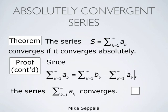We observe that ak equals bk minus the absolute value of ak. Thus, s summation k from 1 to infinity of ak equals summation k from 1 to infinity of bk minus summation k from 1 to infinity of the absolute value of ak. We have shown that the series of bk converges, and we assumed that the series of absolute values of ak converges, so their difference converges as well. Therefore, the series summation k from 1 to infinity of ak converges.